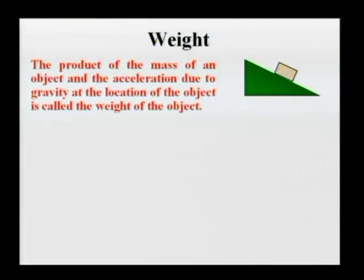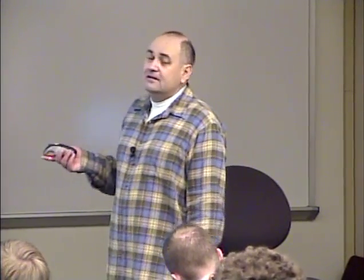We define weight in any reference frame as the product of the mass of the object and the acceleration due to gravity at the location of the object in a particular reference frame. So if we want to figure out the weight of an object in the classroom — let's say my weight — I have to multiply my mass by acceleration due to gravity. The acceleration due to gravity in this room is the acceleration of an object subjected only to gravitational interaction, so it is obviously not my acceleration, because I'm not subjected only to gravitational interaction.